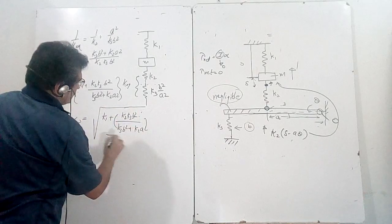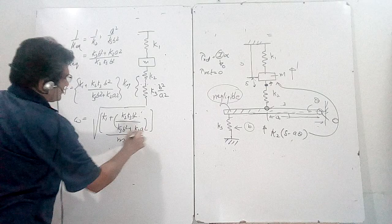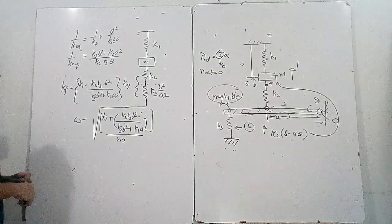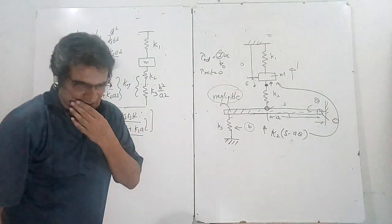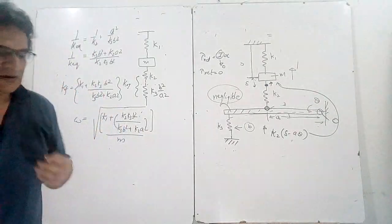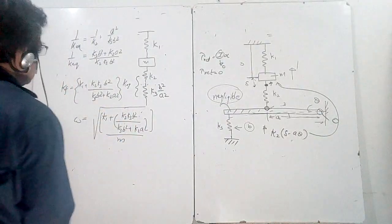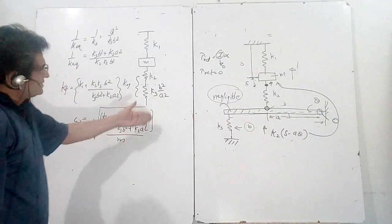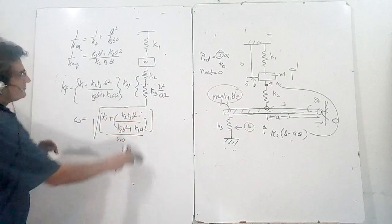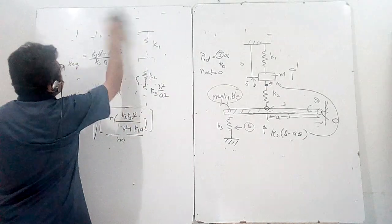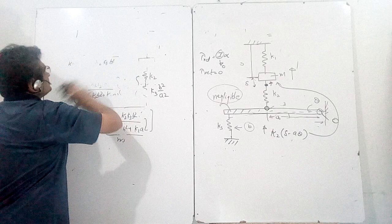And your omega will be k1 plus k2·k3·b² upon (k3·b² + k2·a²), all divided by m. This is your answer. Now I'll do the same thing by the detailed method, which one should also know. If you add more springs, you can keep adding them; it only becomes more complex.